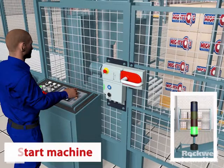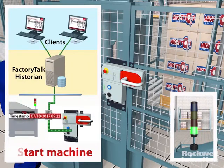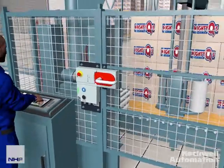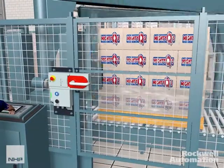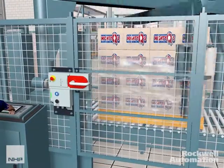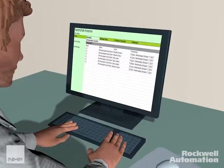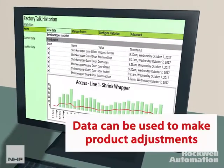All interactions with the safety system are time-stamped and logged in Factory Talk Historian. This allows the data to be used to make application adjustments, helping increase equipment efficiency and minimising issues.